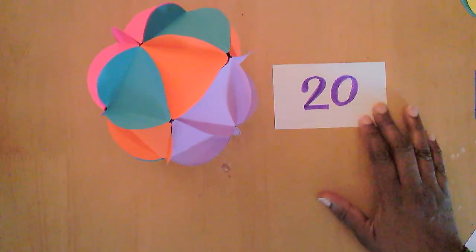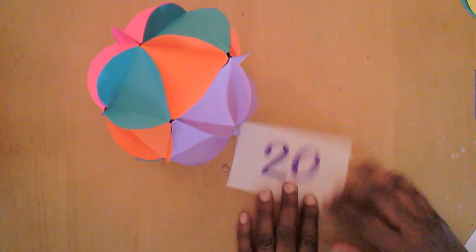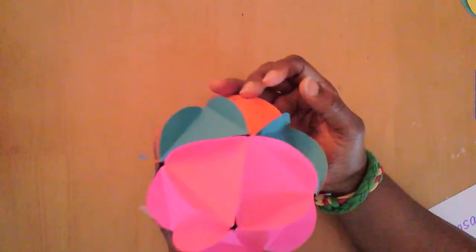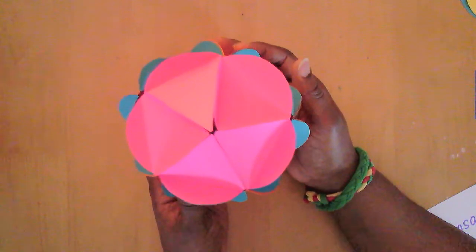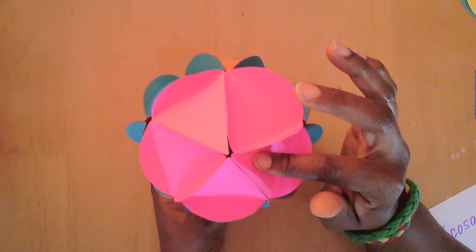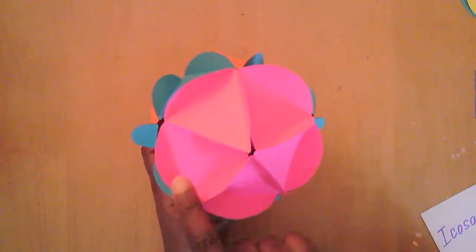It took a long time to make this but I'm going to give you the short version today. This icosahedron has 20 sides and you can see right here in this pink section you have 1, 2, 3, 4, and 5.